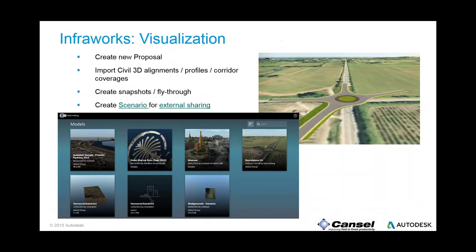That's essentially the complete workflow: starts in InfraWorks for preliminary design, moves into AutoCAD with 2D roundabout design using Autodesk Vehicle Tracking, add the corridor using Vehicle Tracking, finish detailed design in Civil 3D, bring it back into InfraWorks for visualization with trees and videos, and finally share it in the cloud with stakeholders.